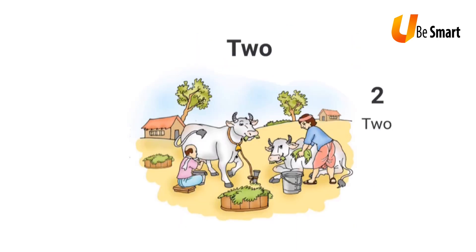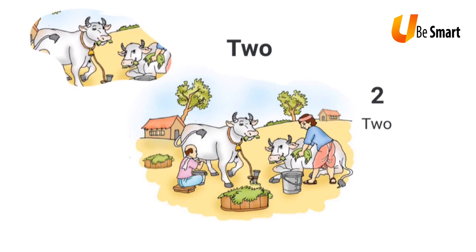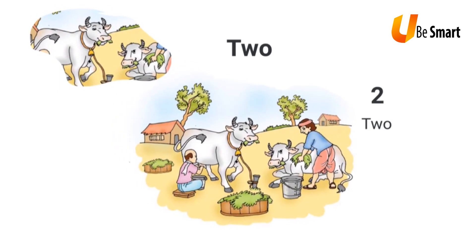Now, in this picture, I am going to find out the things that are 2 in number. For example, I see 2 cows. I see 2 trees.